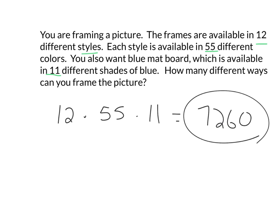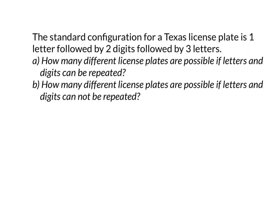The standard configuration for a Texas license plate is one letter followed by two digits followed by three letters, so it looks like: letter, digit, digit, letter, letter, letter. There are 26 letters in the alphabet and 10 digits because you have to count zero - zero through nine is 10 digits, just like on your cell phone. Part A: how many different license plates are possible if letters and digits can be repeated?